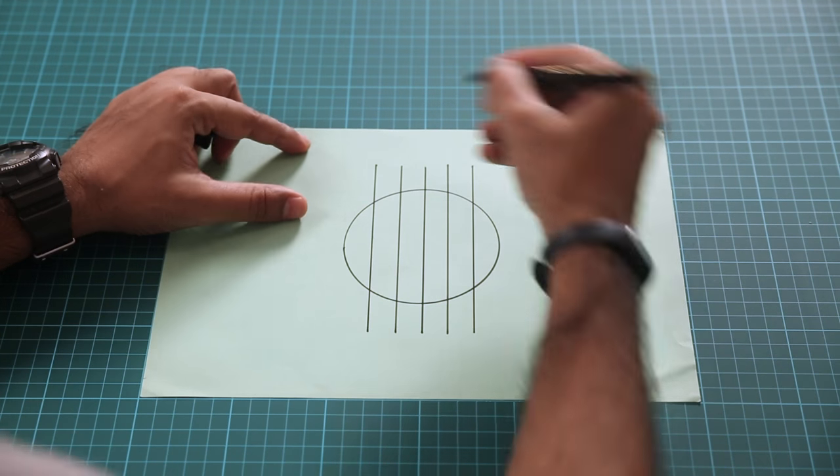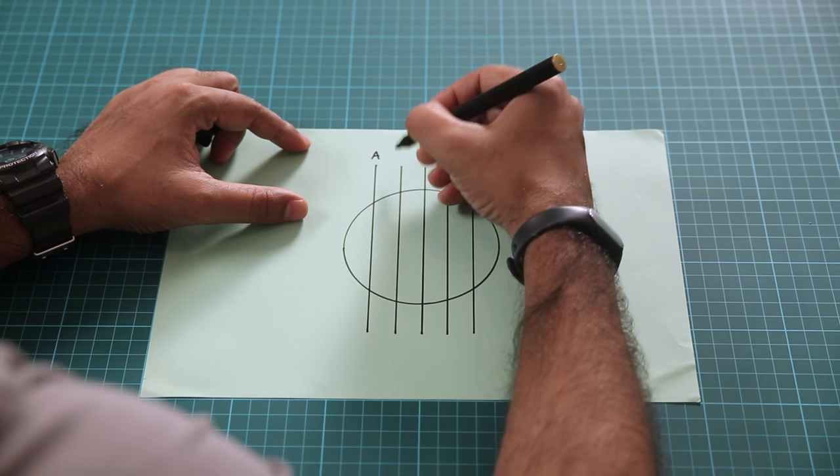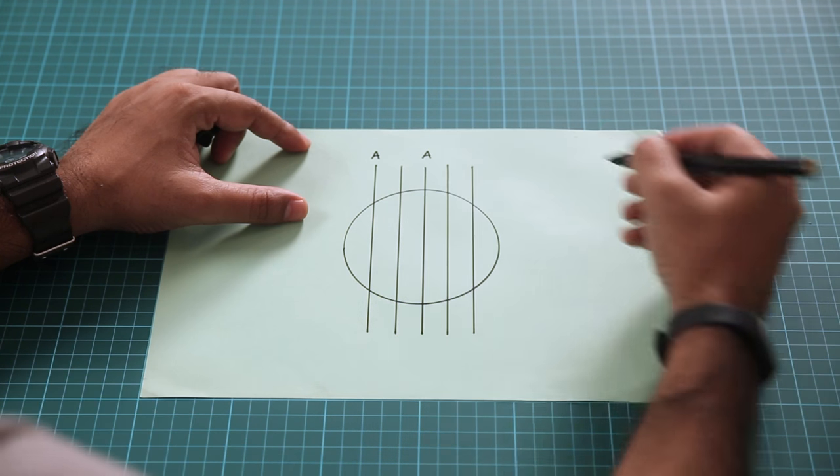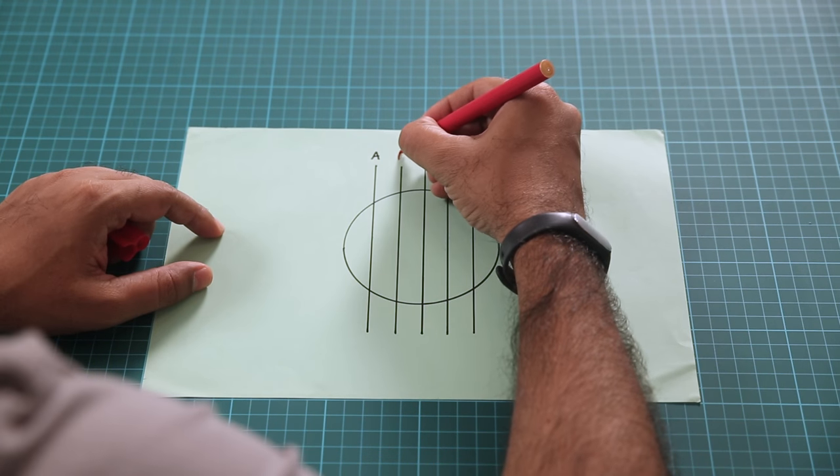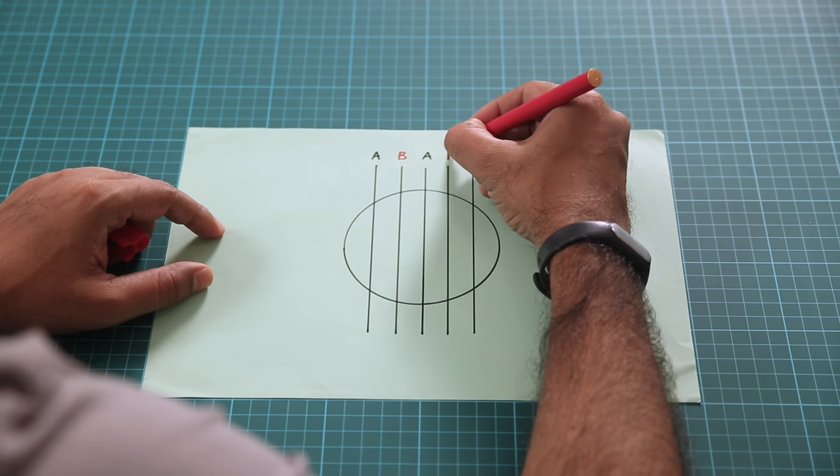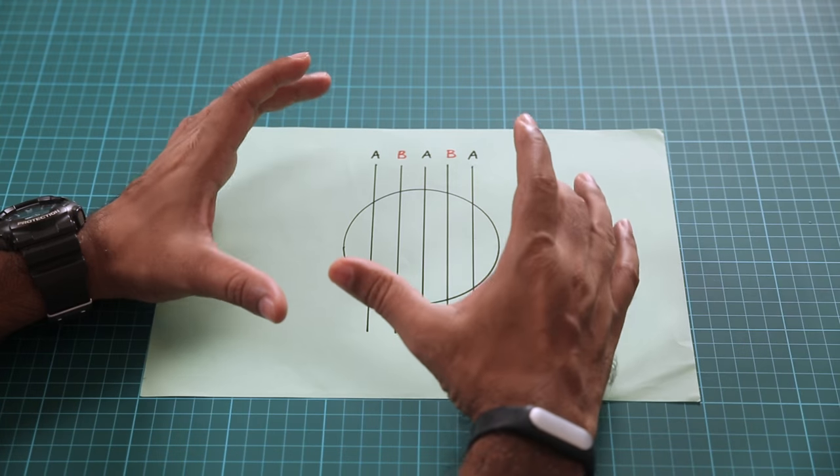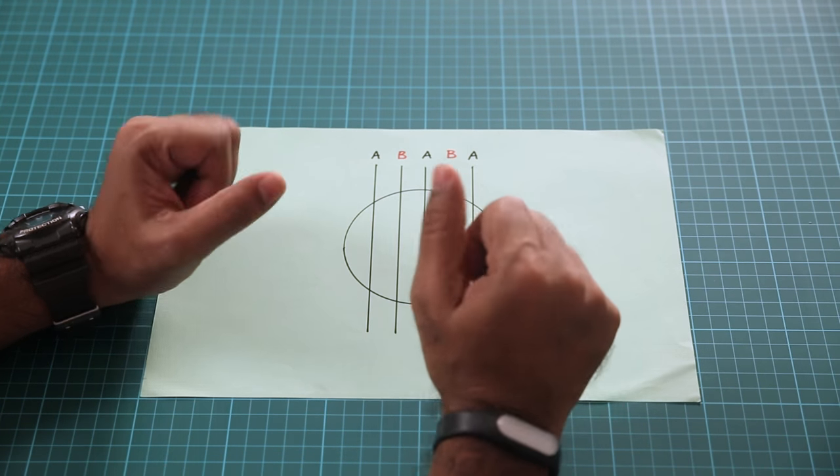Okay, so we'll name them. The first one, A. We'll leave the second. The third will again become A. And the last one will also be A. And then the rest will mark B. And this is your basic template to design your hexagon paper baubles.